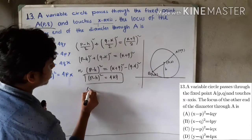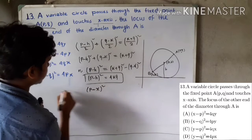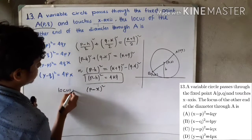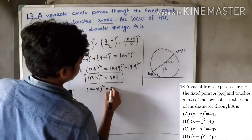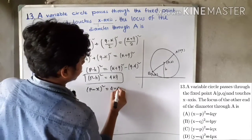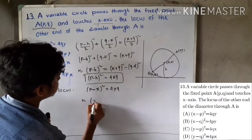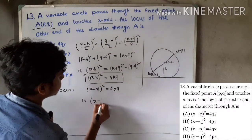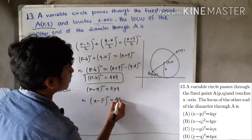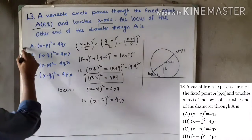Therefore, the locus is (x minus p) squared equals 4yq. So option A is correct.